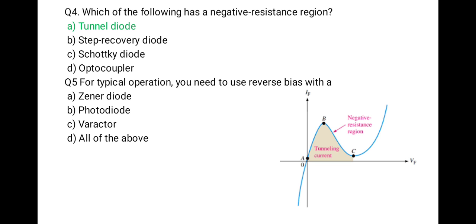The next question: for typical operation, you need to use reverse bias with — first Zener diode, second photodiode, third varactor diode, last all of the above. Zener diode, photodiode, and varactor diode are all special diodes that always work in reverse bias. So the correct option is D: all of the above.